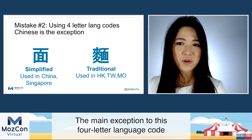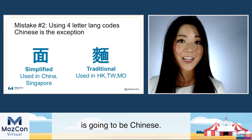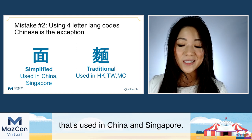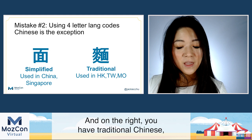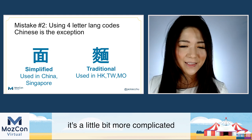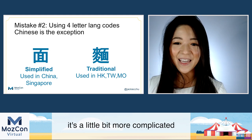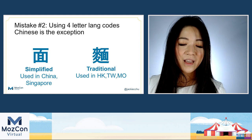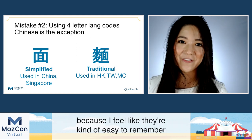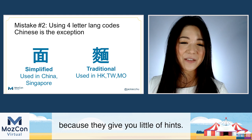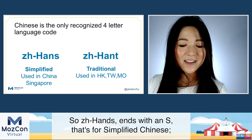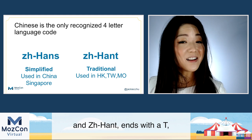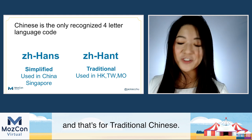The main exception to this four-letter language code rule is Chinese. On the left, you have simplified Chinese — ZH-Hans — used in China and Singapore. On the right, you have traditional Chinese — ZH-Hant — used in places like Hong Kong, Taiwan, and Macau. I like these language codes because they give you little hints: ZH-Hans ends with an S for simplified, and ZH-Hant ends with a T for traditional.